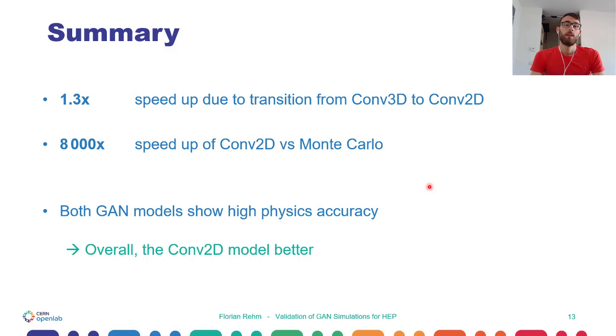Now I am through all our physics validation metrics of our GAN models and want to summarize the results. With the transition from the previous convolutional 3D network to our new convolutional 2D network, we reached a 1.3x speedup. Compared to Monte Carlo simulation, the new convolutional 2D model reached even an 8,000 times speedup. And in general, both GAN models reach a very high physics accuracy and perform great. But when we look very detailed into our plots, we can see that overall the convolutional 2D model performs better.